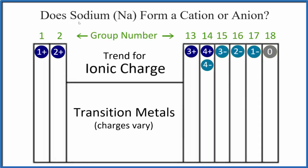Let's take a look at whether sodium — that's Na — forms a cation or an anion. Think of a cation: that 'T' is a positive charge, a positive ion. Or an anion, a negative ion.